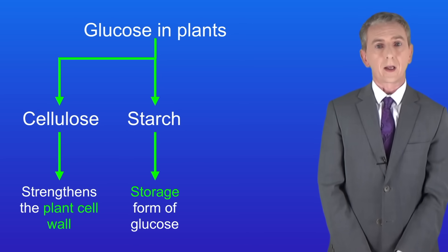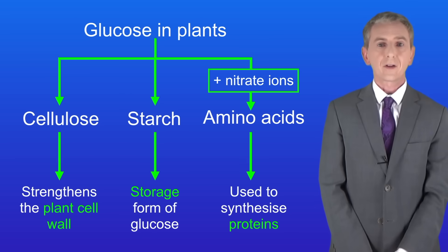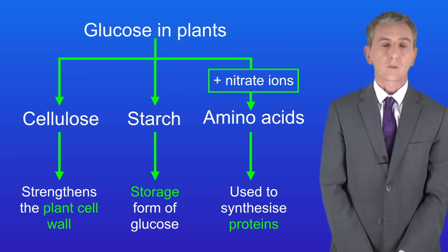And finally, again in plant cells glucose is reacted with nitrate ions to make amino acids. And these are then used to synthesize proteins.